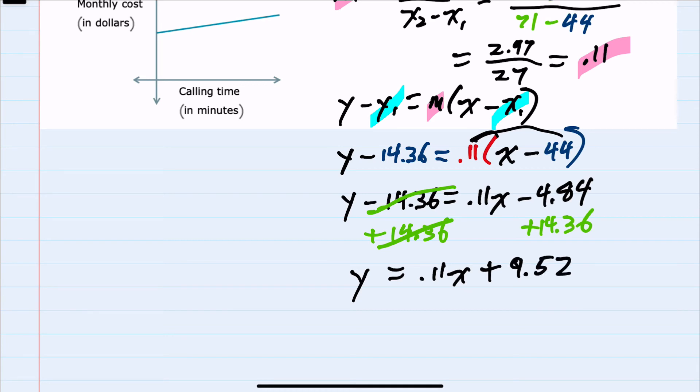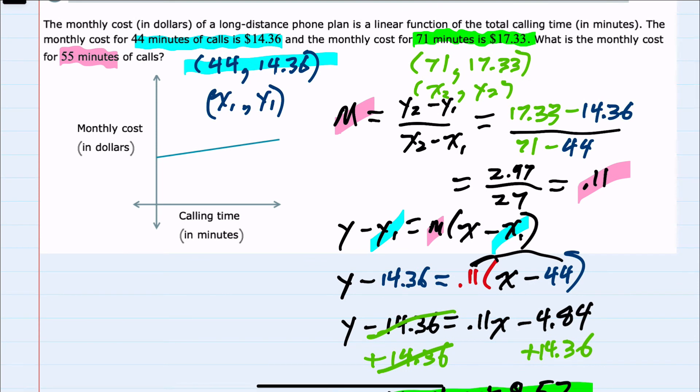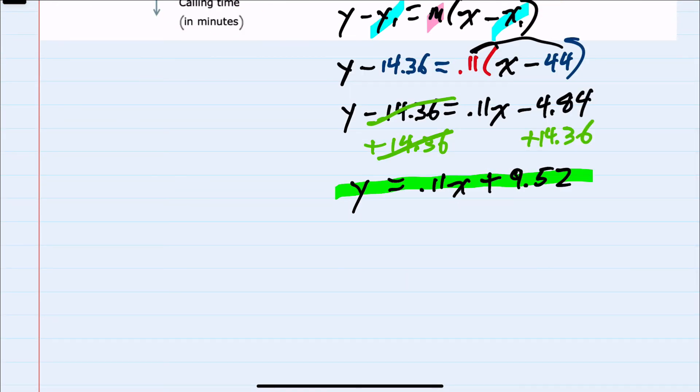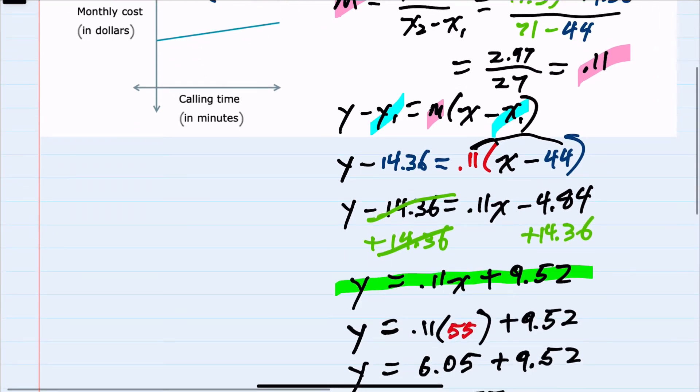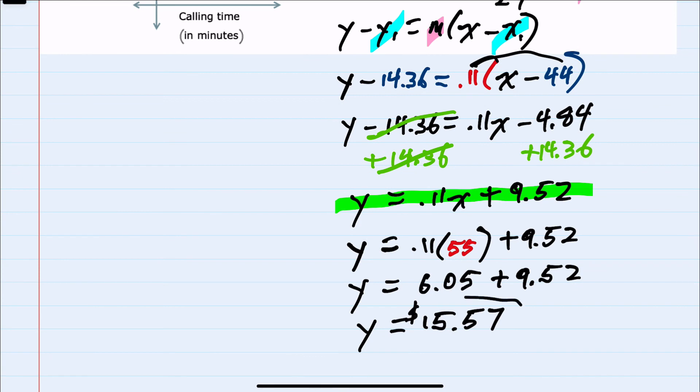We have done quite a bit of work here, but we have found the equation of the line. Now looking back at the question, we're asked, what is the monthly cost for 55 minutes of calls? I can substitute 55 in for x, giving us y equals 0.11 times 55 plus 9.52, which simplifies to 6.05 plus 9.52, or y equals 15.57. So the cost for a 55-minute phone call would be $15.57.